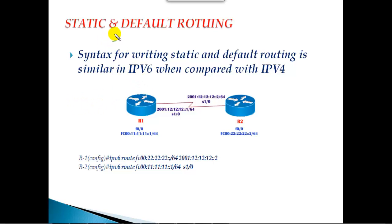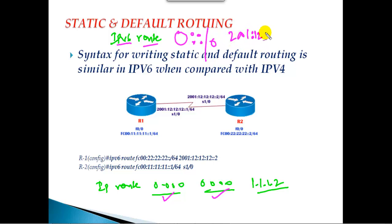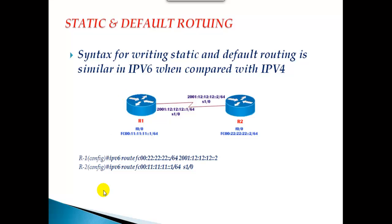The syntax for static route is exactly the same. For default routing in IPv4 we write 'ip route 0.0.0.0 0.0.0.0' followed by the next-hop address. In IPv6, we write 'ipv6 route ::/0' — where :: represents all zeros and /0 represents the subnet mask — followed by the next-hop IPv6 address. The concept of default routing is the same: we use it to route traffic for any unknown destinations, just like routing to the internet.